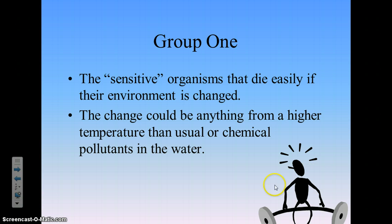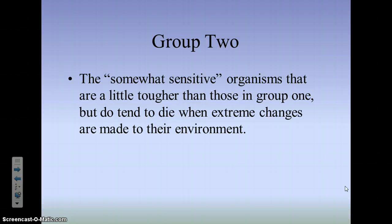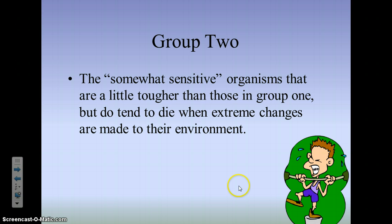I like to show a picture of a weak, pathetic guy to represent a Group One organism — not very strong. Group Two are somewhat sensitive. They are a little tougher than Group One but not as tough as others. They will still die if there is an extreme change; instead of dying at 10 to 20 degrees higher, they might die from 25 to 30 degrees higher. They are still very helpful to study, but they are a little in between — not as weak as Group One.